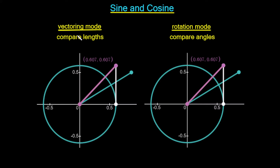In vectoring mode, it allows us to work out the inverse functions. In rotation mode, it allows us to work out the functions. So let's go ahead and see how we can use this rotation mode in order to work out the sine and cosine function.